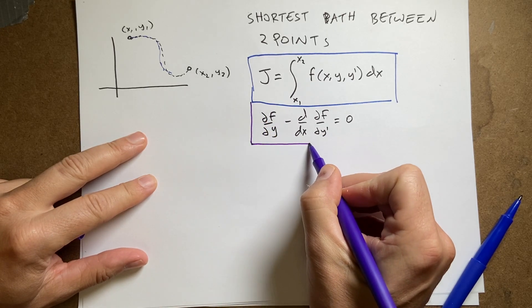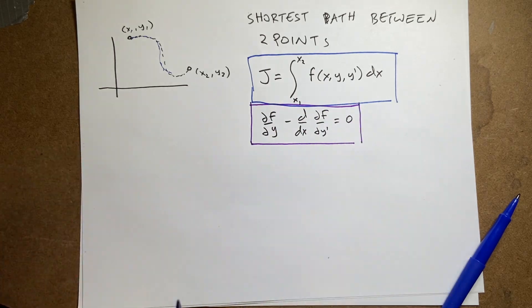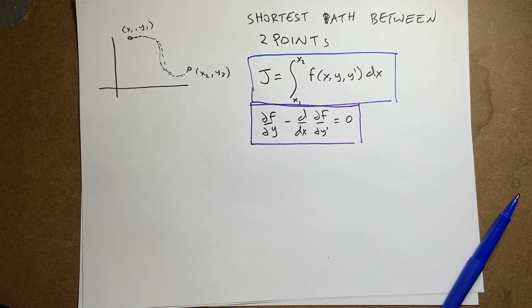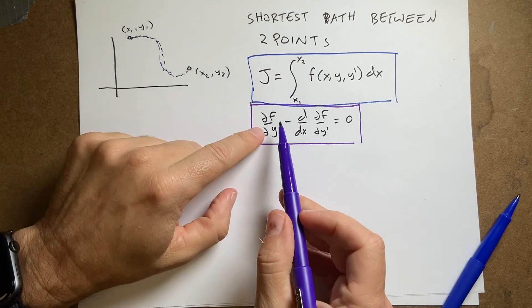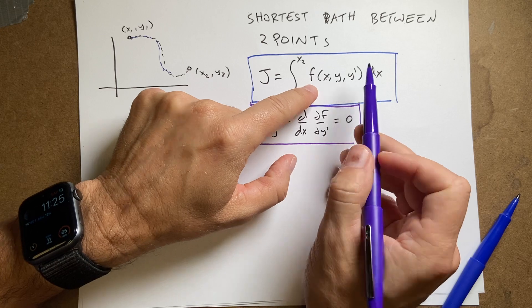And it's so useful, I'm going to do it in purple. This is the Euler-Lagrange equation. I'm not going to derive it. But we need to use this to solve this problem. And it turns out that we can use this for a whole bunch of mechanics problems.